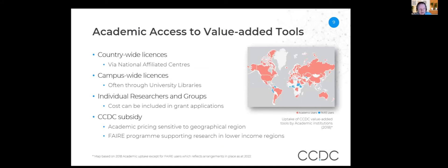The tools we make available to industry we also make available to academia to enable research into structural science and structural chemistry. One route is through the network of national affiliated centres, where a number of country-wide licences are now in place. For researchers in those regions, the value-added tools are free at the point of use, supported by a consolidated contribution from the affiliated centre. Tools are made available across campuses, often through university libraries, particularly in North America. Individual researchers and groups can also take out a licence for their lab or a particular project.